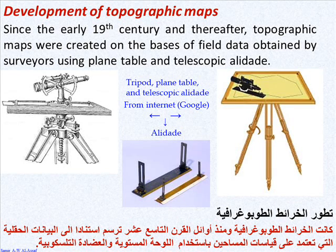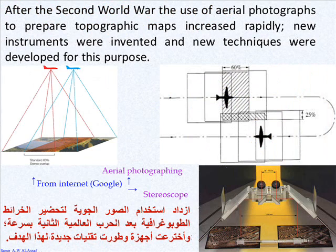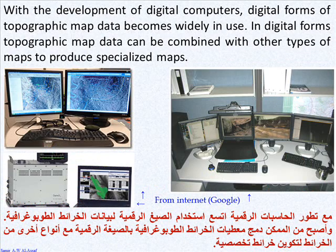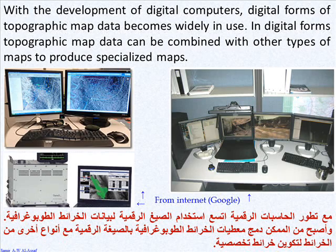Since the early 19th century and the years after, topographic maps were created on the basis of field data obtained by surveyors using plane table and telescopic alidade. After the Second World War, the use of aerial photographs to prepare topographic maps increased rapidly. New instruments were invented and new techniques were developed for this purpose. With the development of digital computers, digital forms of topographic map data became widely in use. In digital forms, topographic map data can be combined with other types of maps to produce specialized maps. Different scanning techniques and software tools were developed to produce highly accurate topographic maps with various scales.